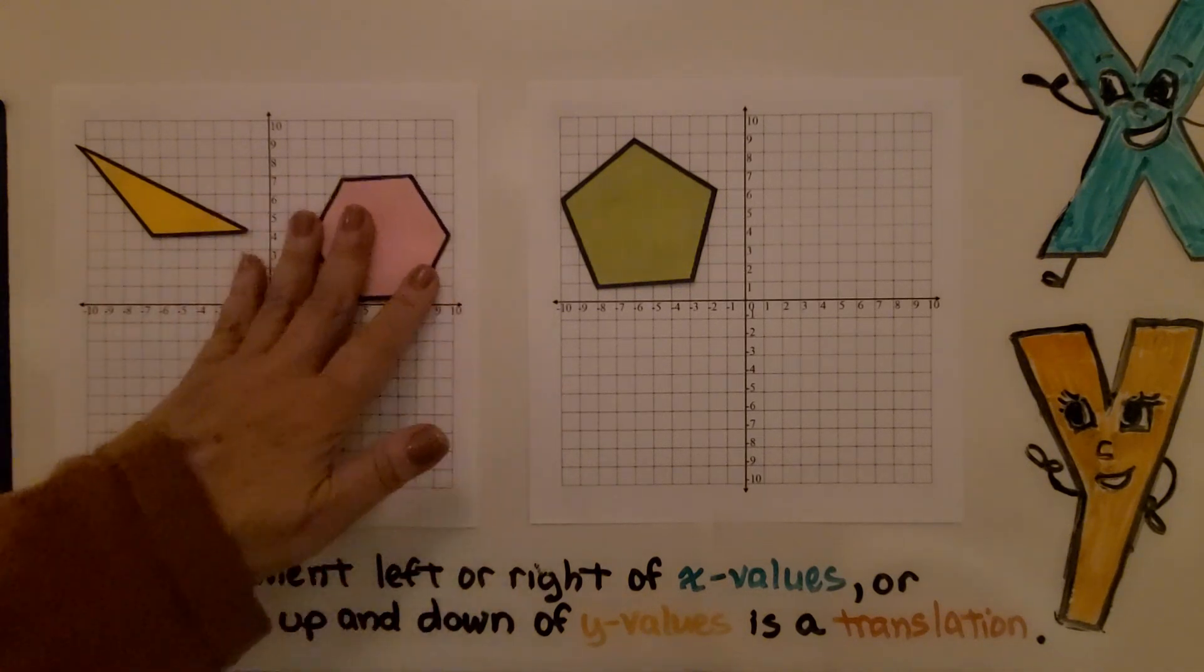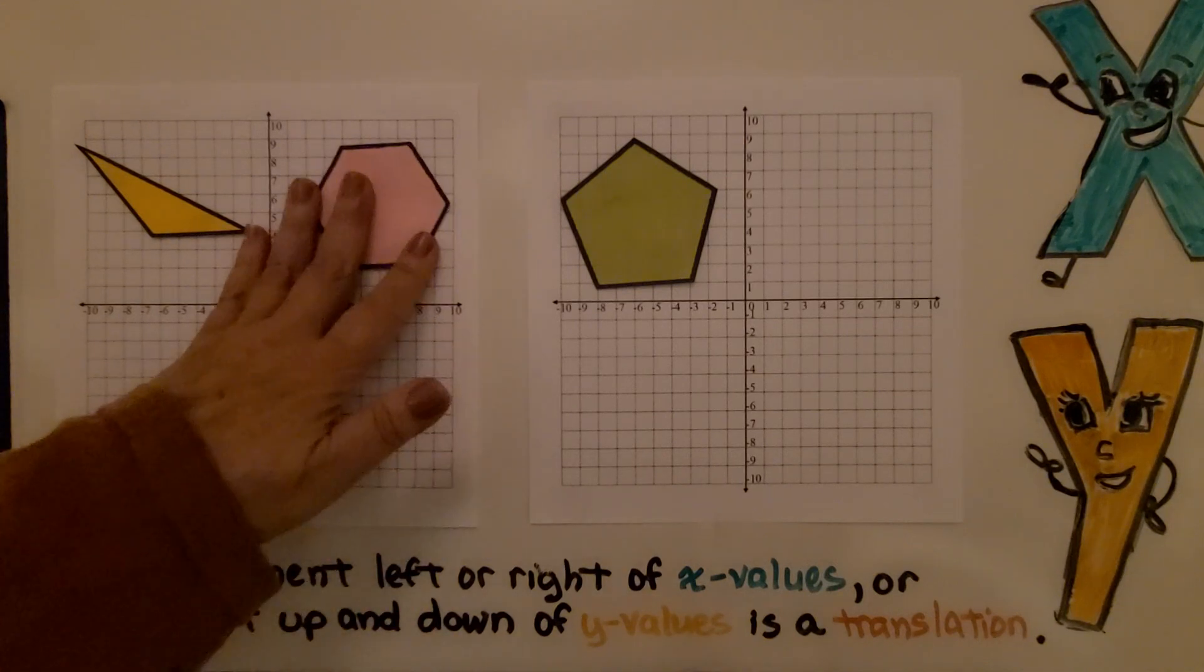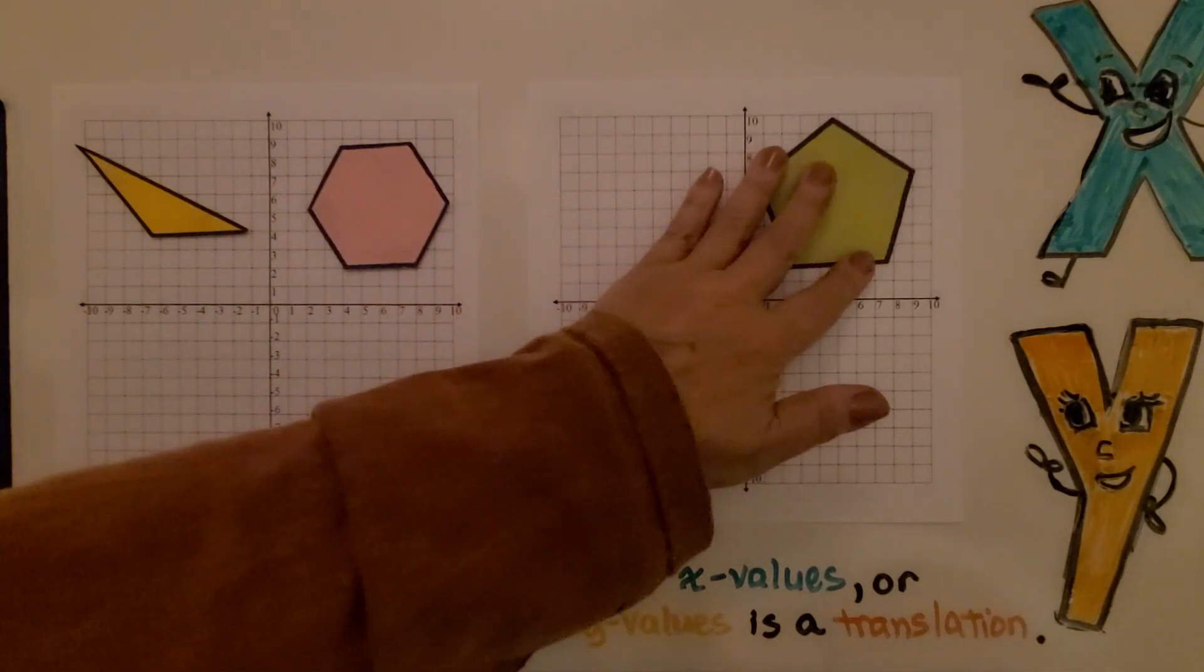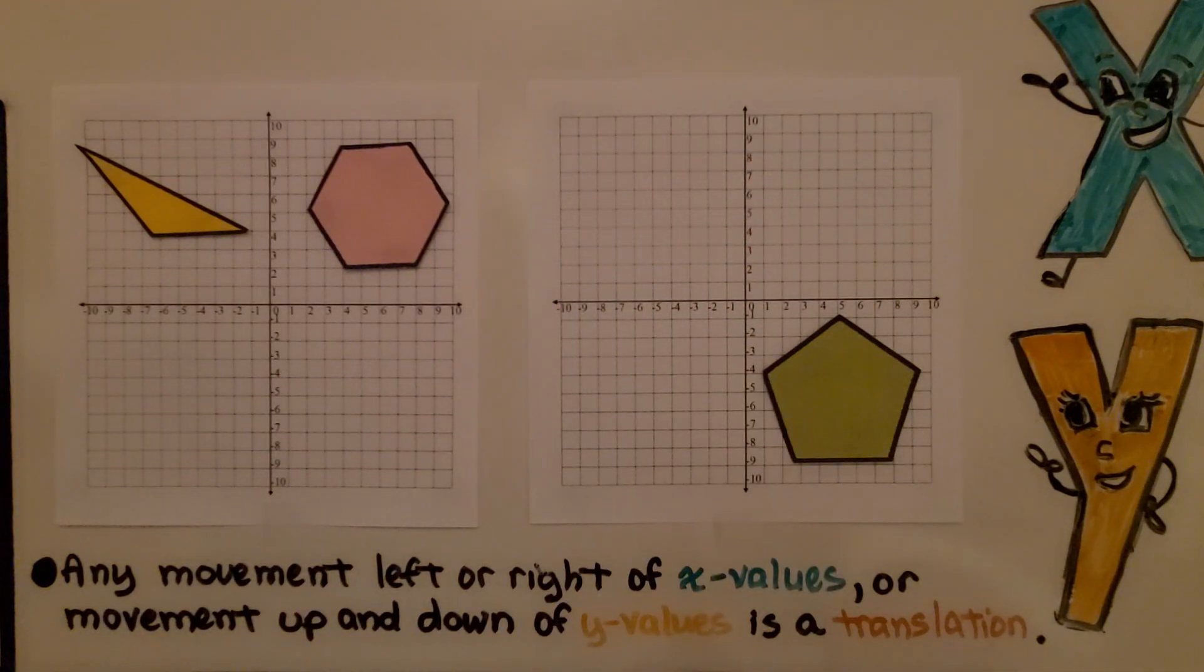I'm not turning it, just moving it left and right, up and down. Same with this pentagon—I can move it to the right and then move it down. And we've translated it.